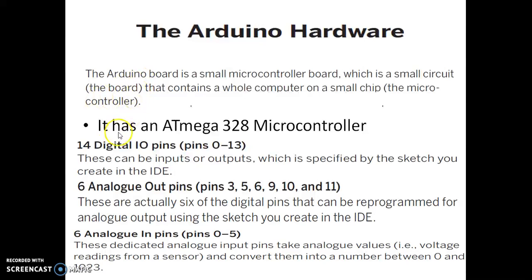The Arduino board hardware has 14 digital I/O pins, named from 0 to 13. Out of these 14 digital I/O pins, there are 6 analog output pins — these are 6 of the 14 digital pins that can be reprogrammed for analog output using the sketch you create in the IDE. The sketch means the program that we create in the IDE.